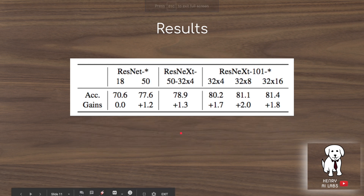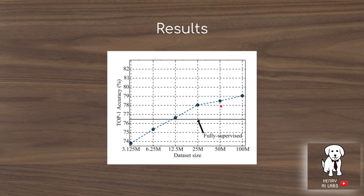One plot shows results when the teacher and student have the same architectural capacity — interestingly, gains are still observed even with matched capacities. Another plot shows how top-1 accuracy changes as a function of unlabeled or weakly supervised dataset size, with performance continuing to increase as the dataset grows larger, confirming their guideline that massive unlabeled datasets are key to this framework.